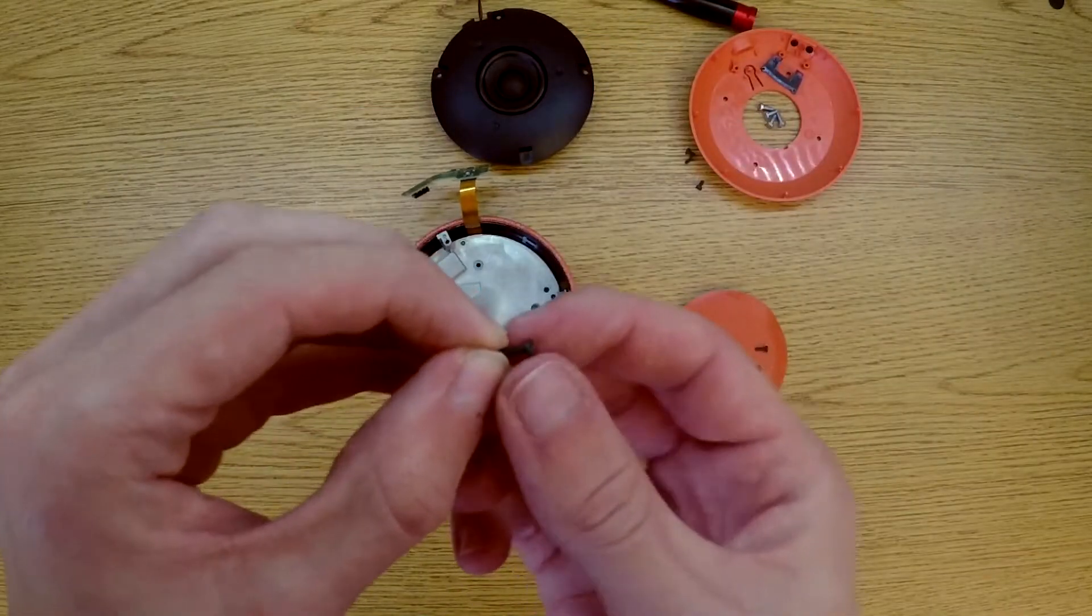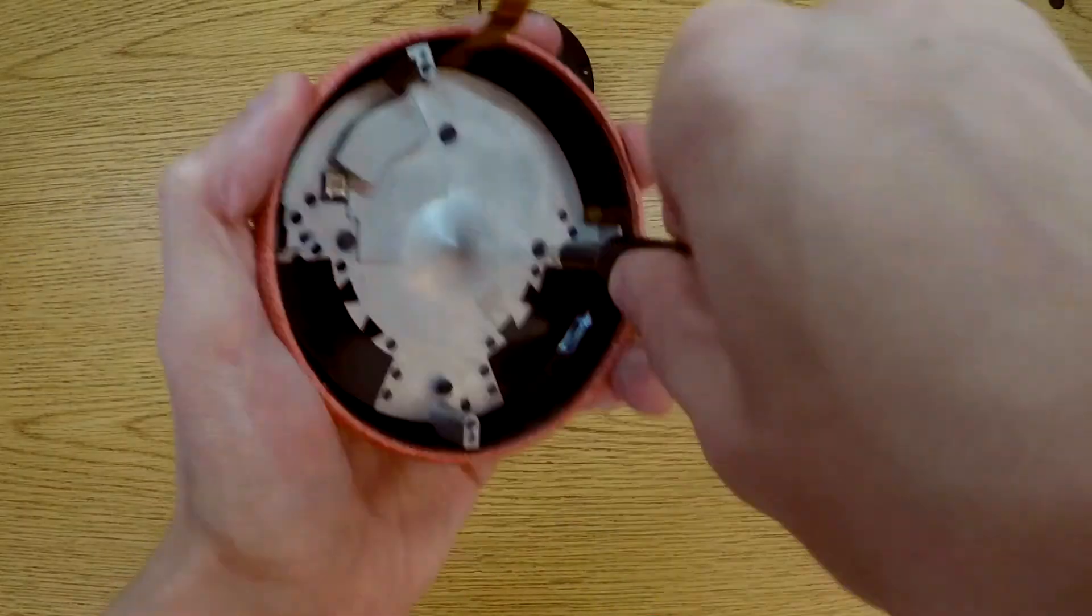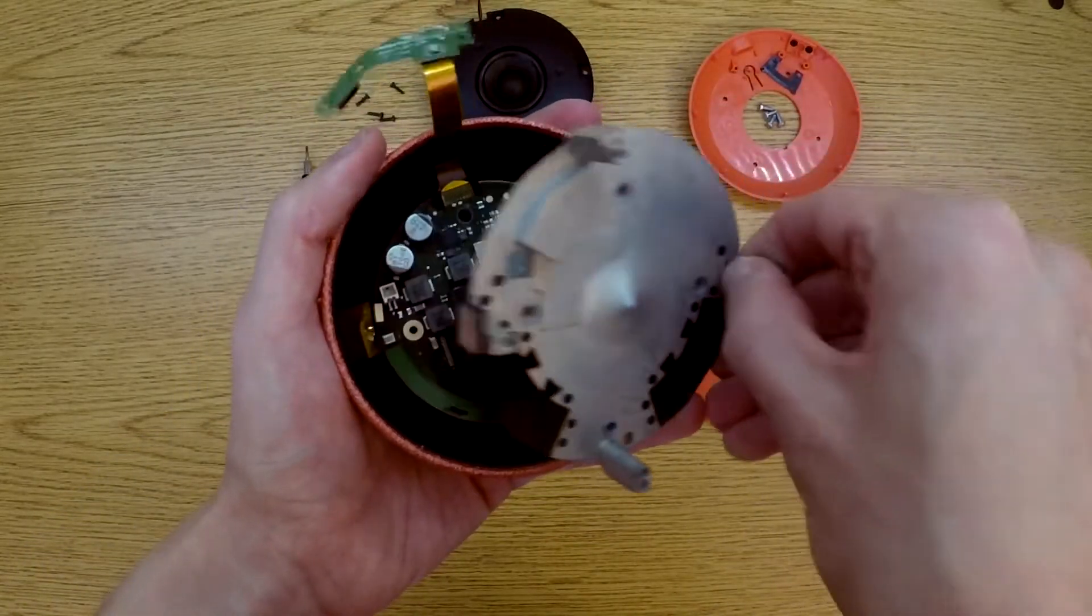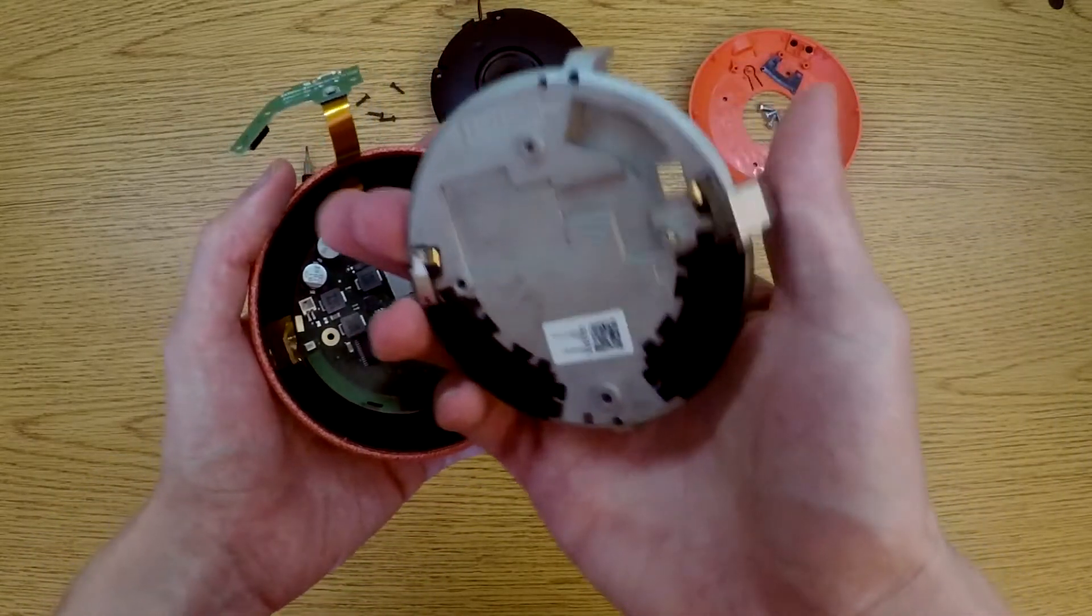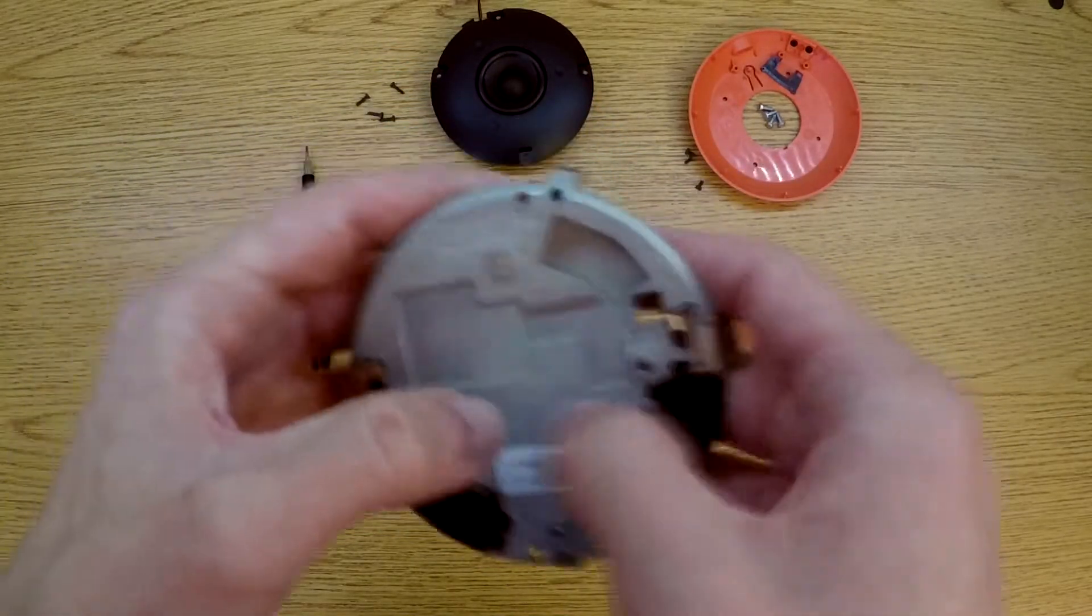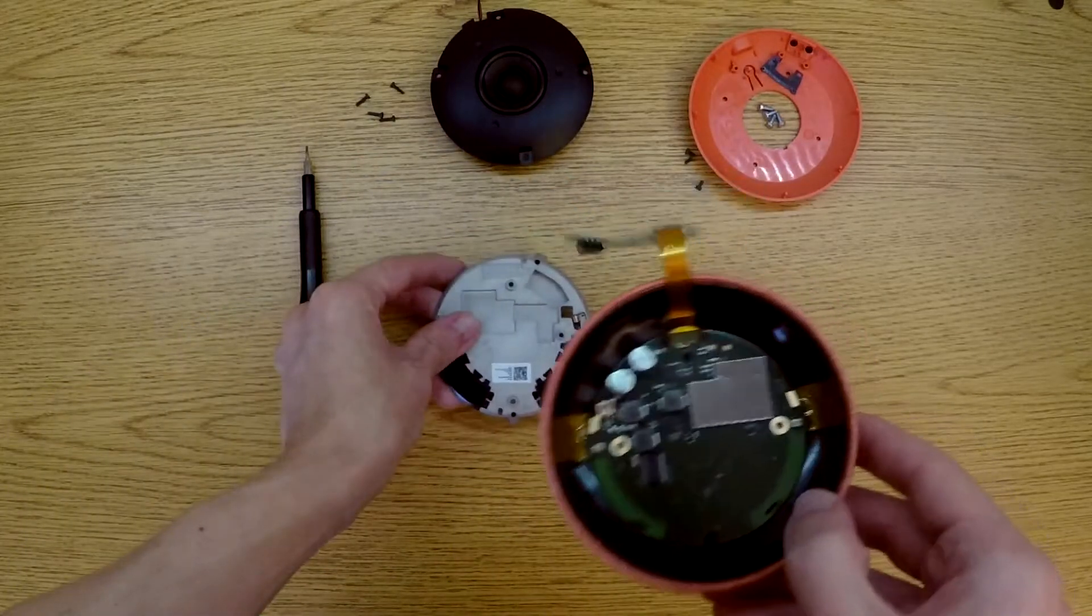So what this plate has is four T6 screws. Now we can just lift this plate out. The underside of this plate is just metal that protects the motherboard.